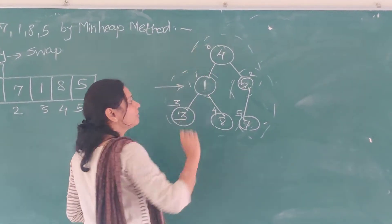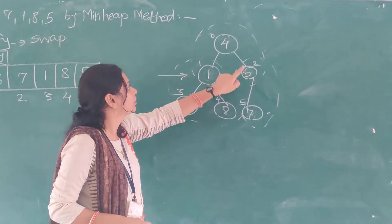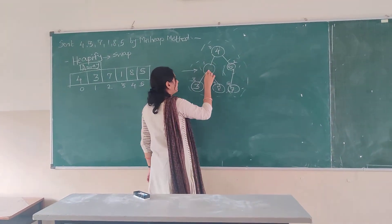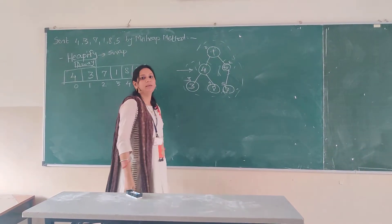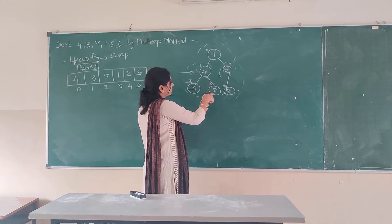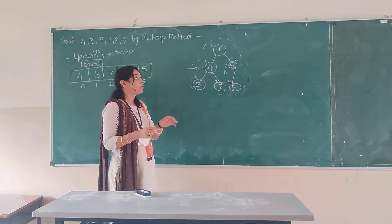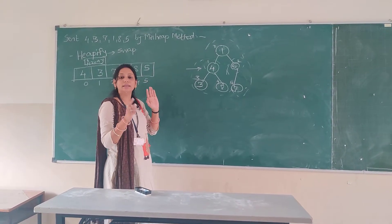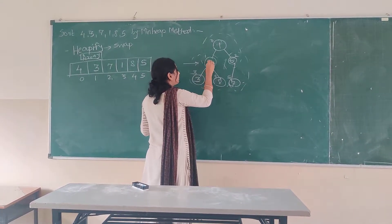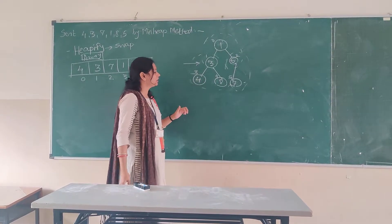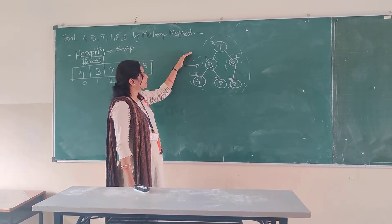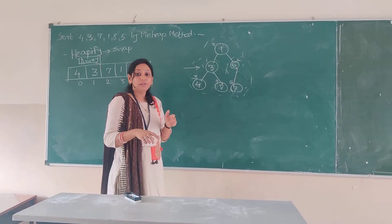Moving further to the next level with nodes 4, 1, and 5. Since 4 is less than 5 but greater than 1, we do swapping: 4 goes down and 1 comes to the parent. Checking again from the lowest level: 4 is less than 8 but greater than 3, so we swap again — 3 comes here and 4 goes there. Now checking 5 and 7: since 1 is less than 3 and 5, this is now the balanced min heap tree.